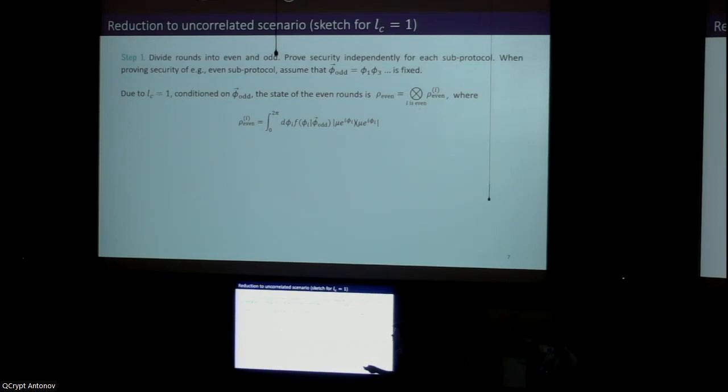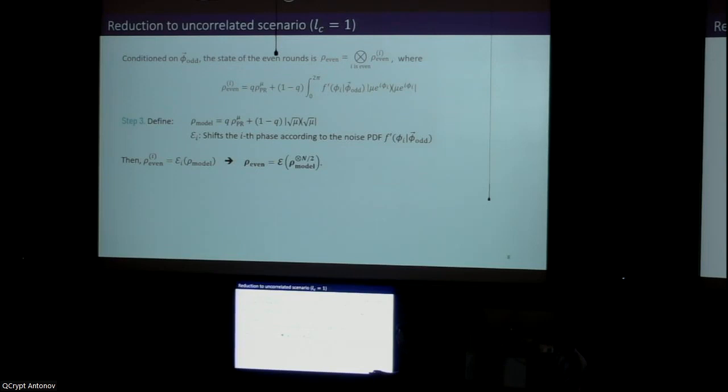The second step is to show that due to assumption two, each of these independent density functions can be expressed as a convex combination of two other density functions: one that corresponds to a perfectly uniform distribution and one that corresponds to some uncharacterized noise. This directly implies that the state of each even round can be regarded as a statistical mixture that contains a perfect phase randomized coherent state.